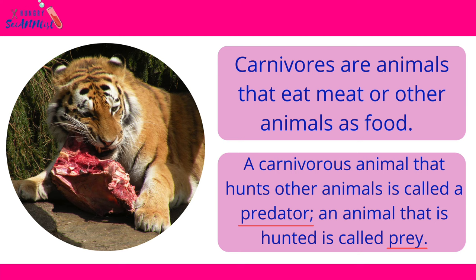Carnivores are animals that eat meat or other animals as food. A carnivorous animal that hunts other animals is called a predator. An animal that is hunted is called prey.